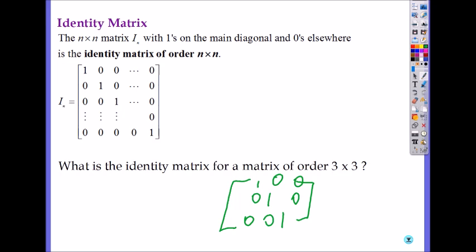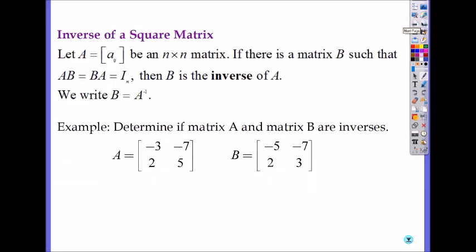So why do we need the identity matrix? When you find the inverse of a square matrix — if you multiply A and B and they are inverses of each other, A times B and B times A both become I, the identity matrix. That's how you check if two matrices are inverses of each other.